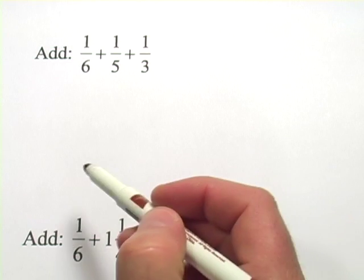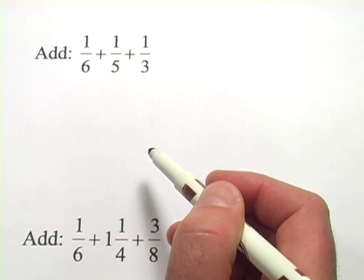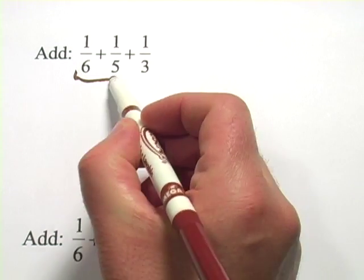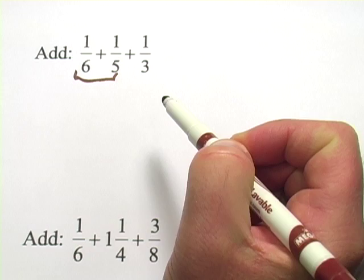In these problems, we're being asked to add three different fractions together. The way that I would go about this is maybe add two together and then try to add the last one to it.